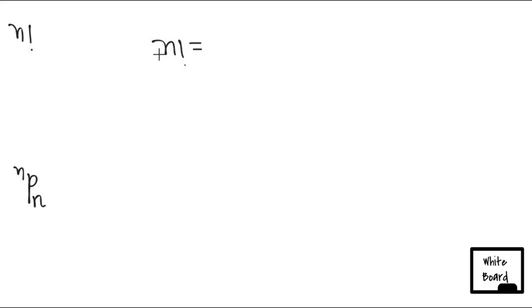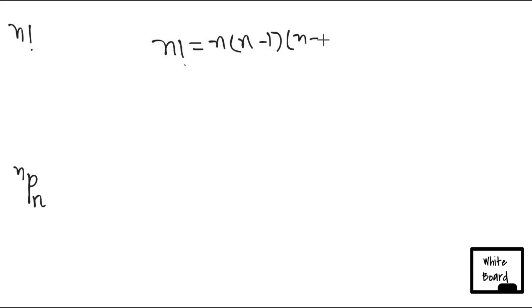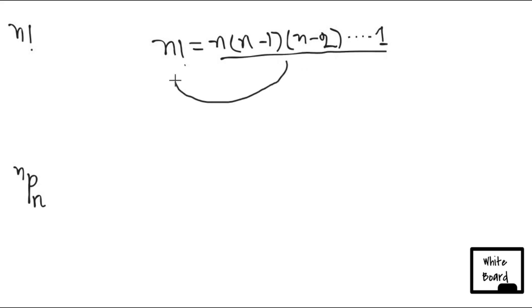So, n factorial is equal to n. So, n factorial is equal to n into n minus 1. So, n minus 2 is equal to n minus 2.